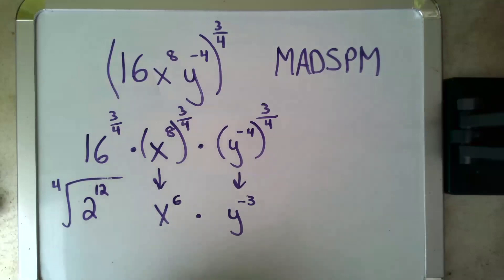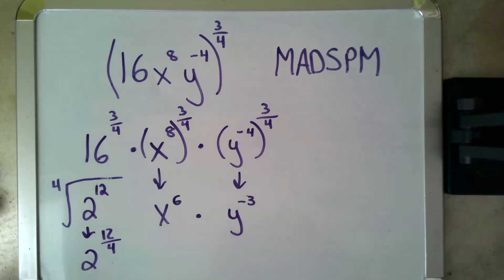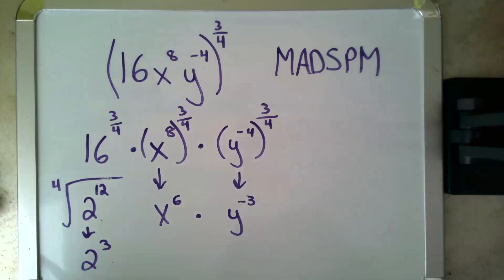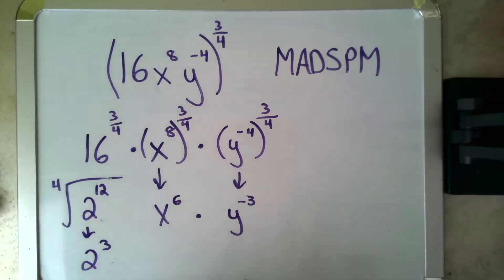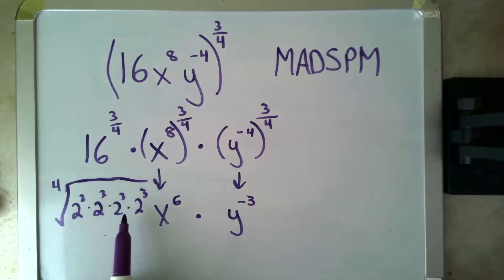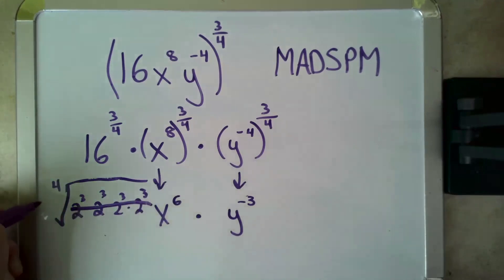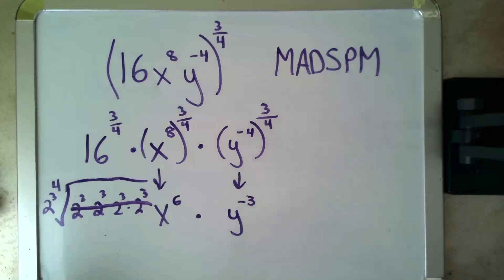There are different ways to simplify the fourth root of two to the 12. One approach is to convert it back into a fractional exponent: two to the 12 over four, which is just two to the third. Alternatively, you can factor: two to the 12 is two to the third, times two to the third, times two to the third, times two to the third. If I have four of them inside a fourth root, that means one of them comes out, giving two to the third on the outside.